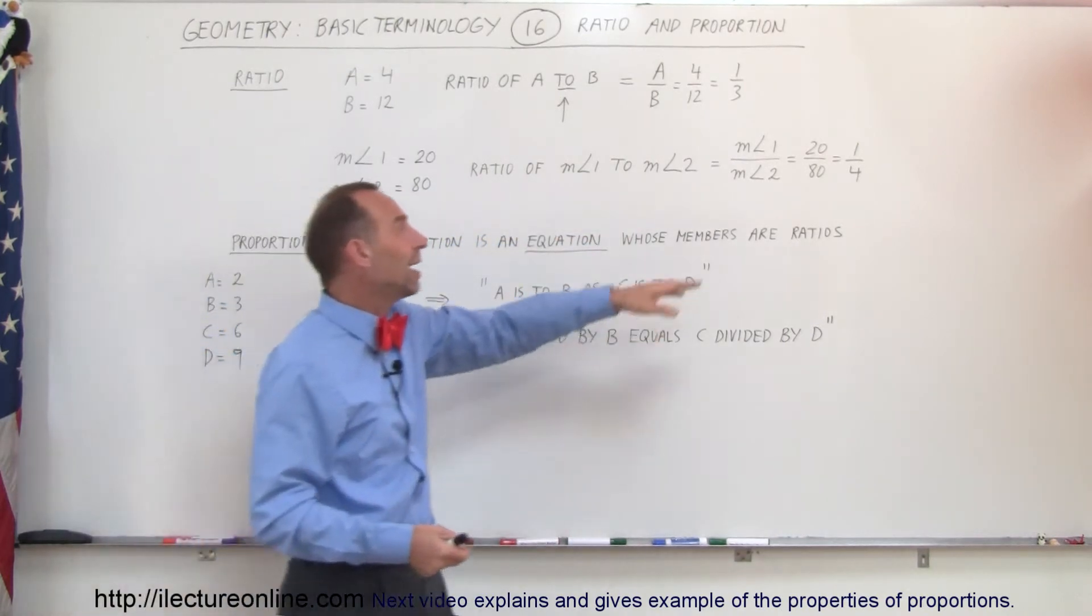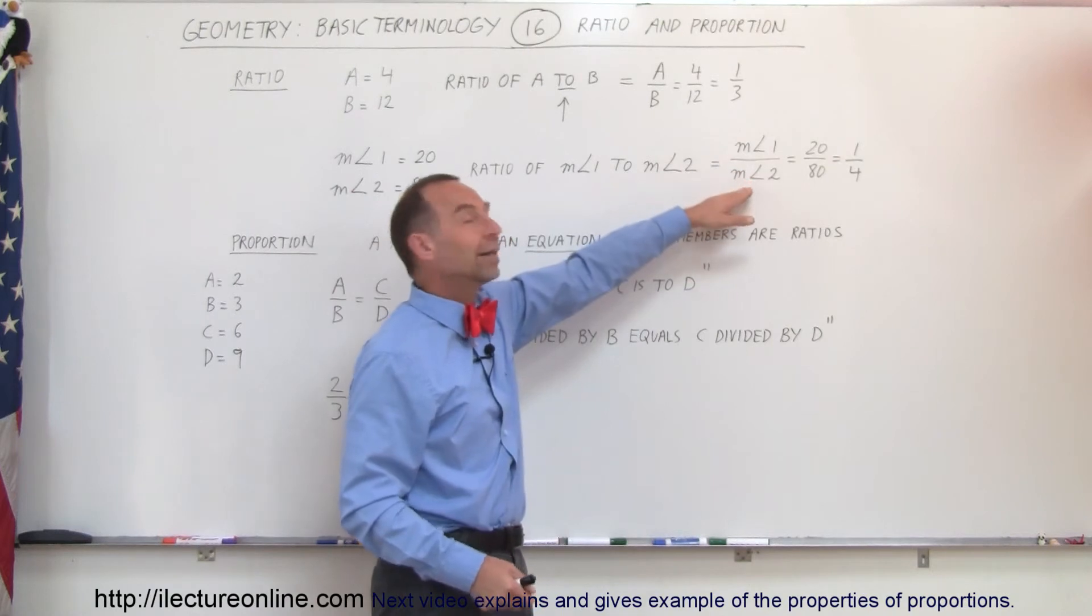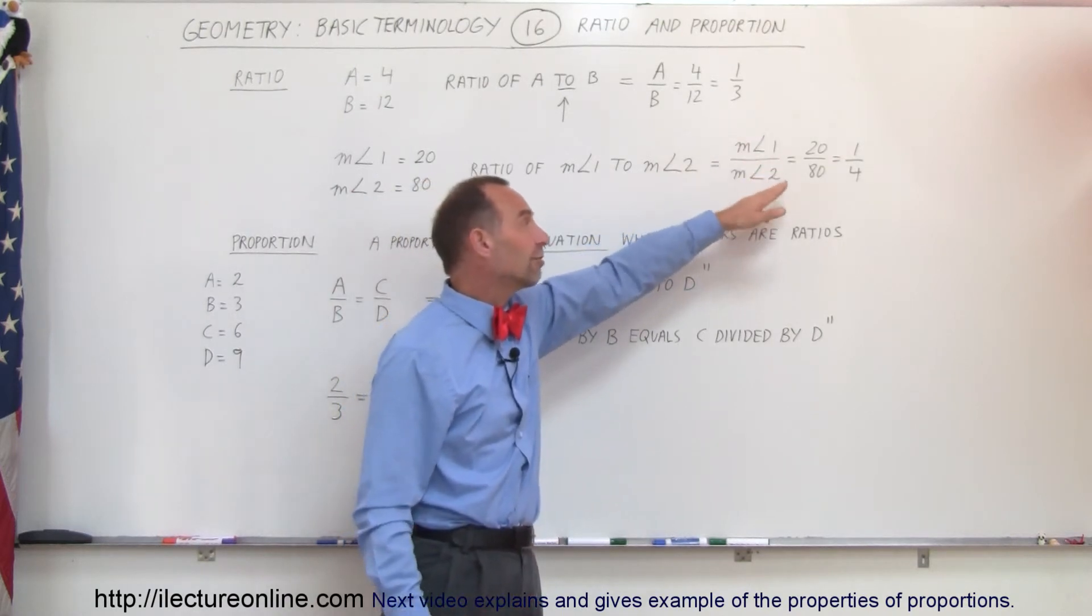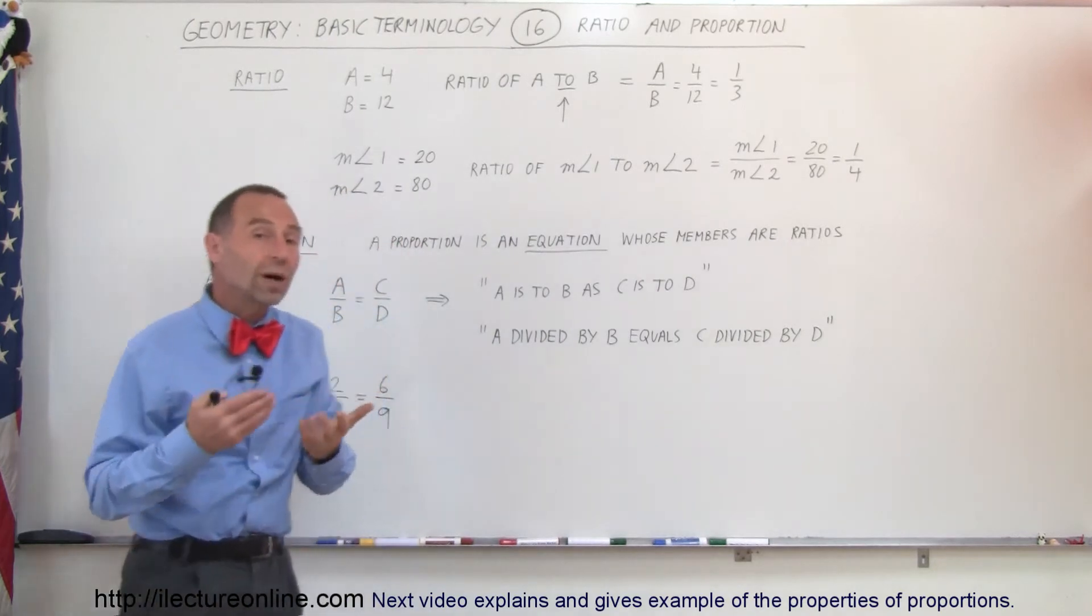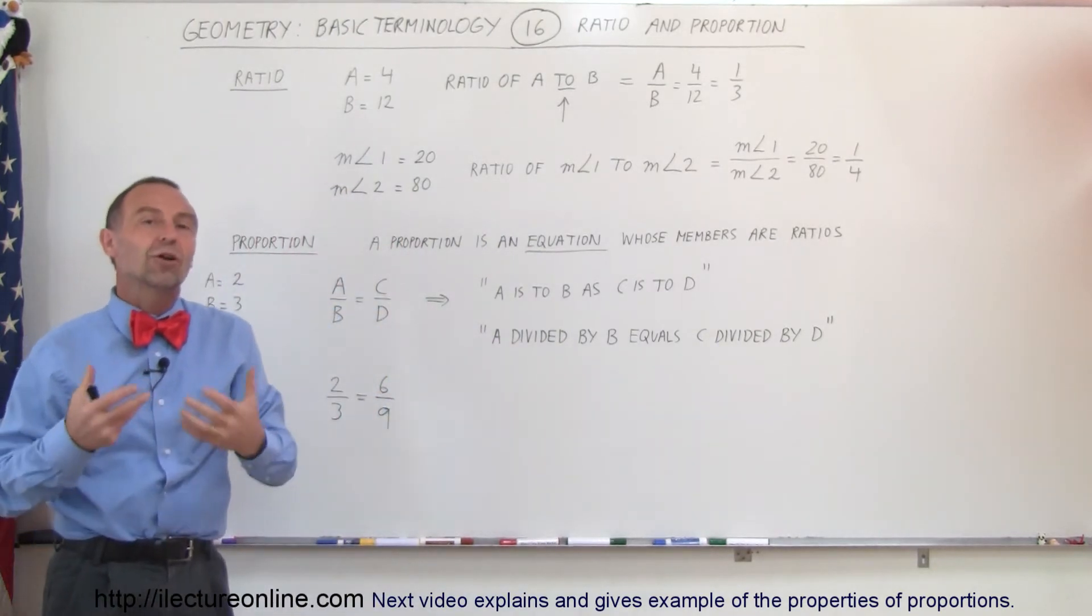it's simply a division. We divide the measure of angle 1 by the measure of angle 2. We write 20 divided by 80, which is 1 fourth, which means that the measure of angle 1 is 1 fourth the measure of angle 2.